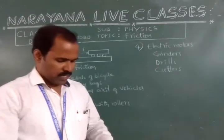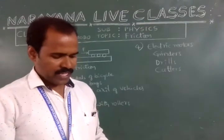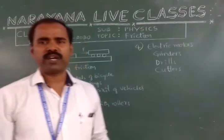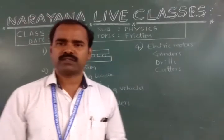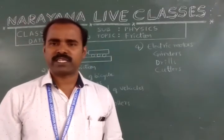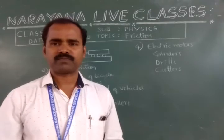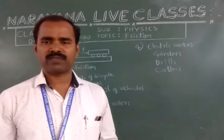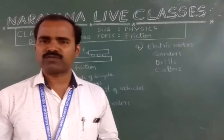Next question. Write the examples where we are using rolling friction. Where we are using in our day-to-day life rolling frictions? Bicycle. For example, bicycle. Pedals. Pedals will rotate freely because of the roller bearings. Bearings will be there.